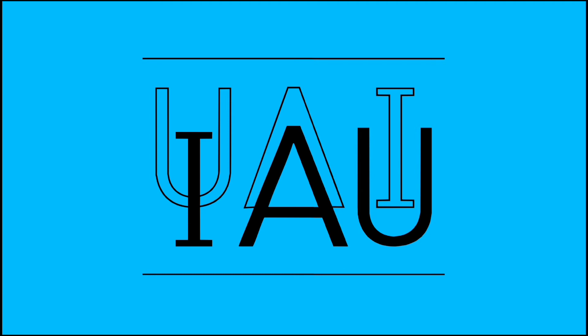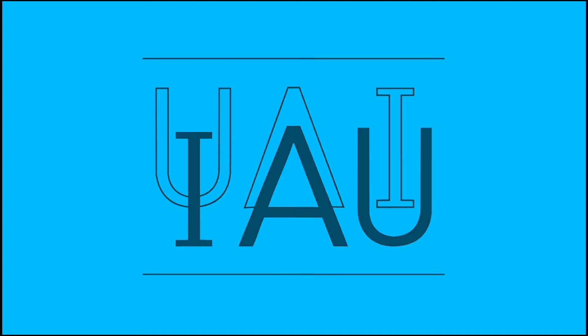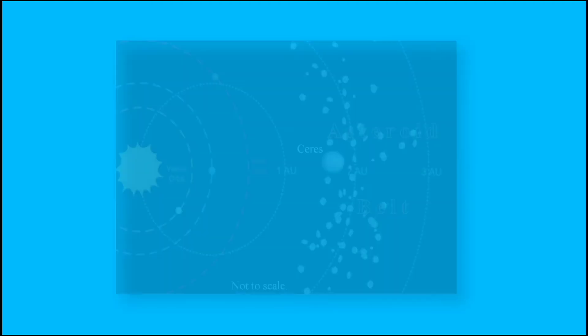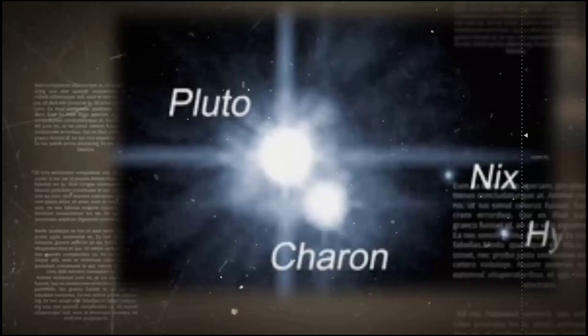The International Astronomical Union, also known as IAU, further decided that bodies like Pluto that meet criteria 1 and 2 but do not meet criteria 3 would be called dwarf planets. It also included Ceres, which is in the asteroid belt.